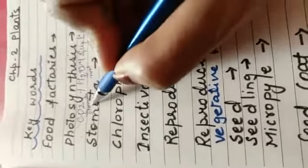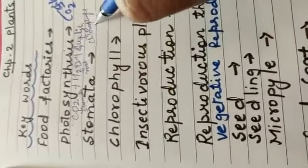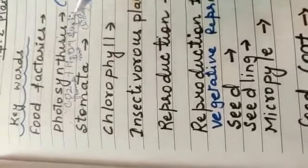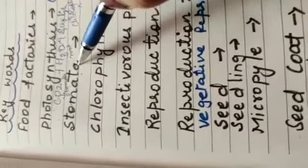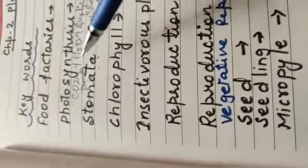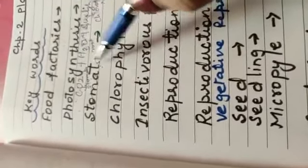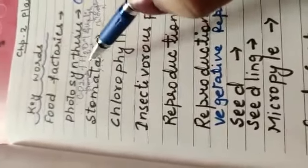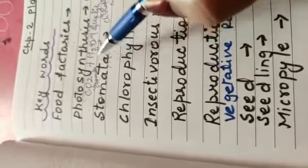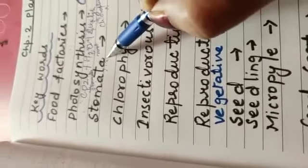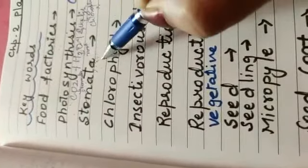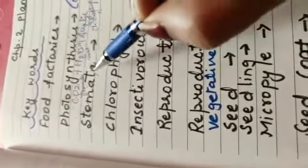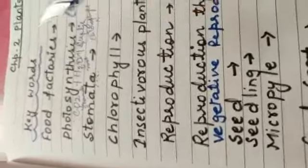You are familiar with the words stomata and chlorophyll. The next keyword is stomata. Stomata is a tiny pore present on the leaf surface. Carbon dioxide present in air, which plants need, is taken in through these tiny stomata pores on the leaf surface.